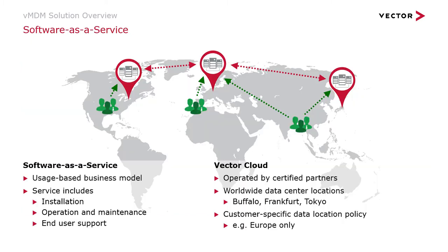VMDEM software as a service. In the case of a VMDEM deployment in the cloud, VMDEM is offered as a service — we call this software as a service, SaaS. With SaaS, Vector will provide the infrastructure and take care of the installation and operation of the VMDEM solution. With our cloud provider, Vector will deploy VMDEM in data centers in Europe, America and Asia. Access to the Vector cloud is via a service gate where authorization and authentication will take place.